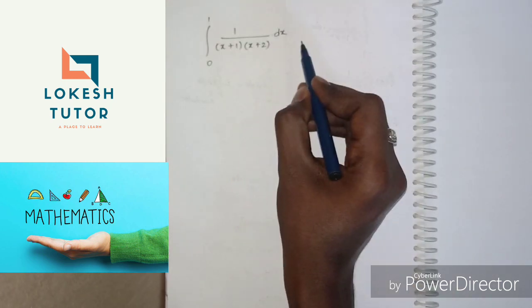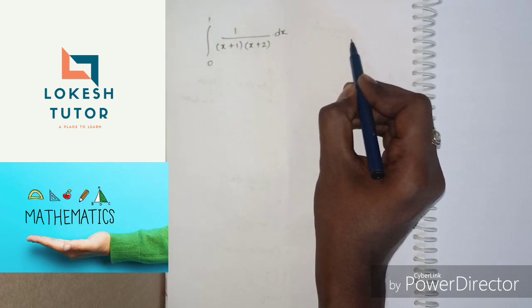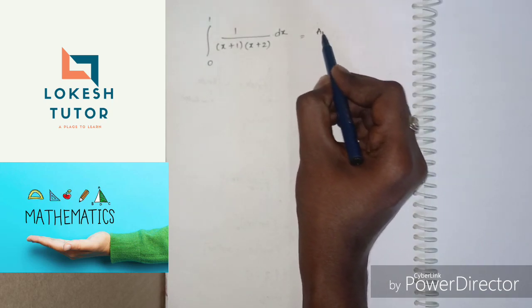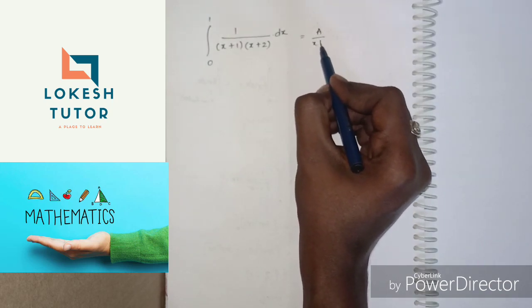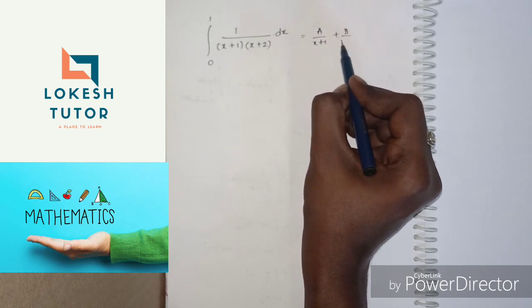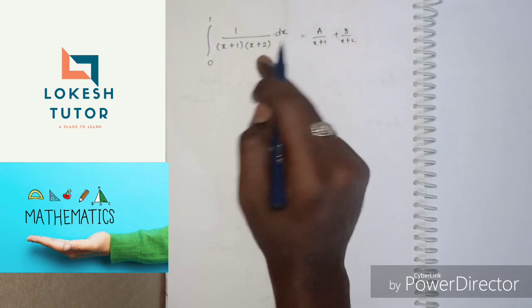We are going to choose A by (x plus 1) plus B by (x plus 2). We are going to choose a value for x equal to minus 1.